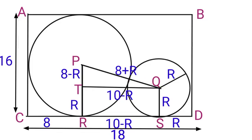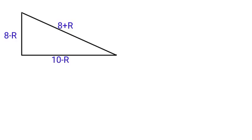We have a right triangle here, so we will use Pythagorean theorem, which says that the square of the hypotenuse is equal to the sum of the squares of the other two sides. So we have (8+R)² = (10-R)² + (8-R)².